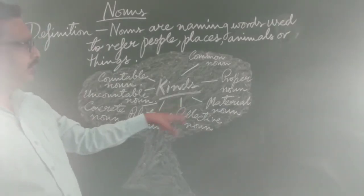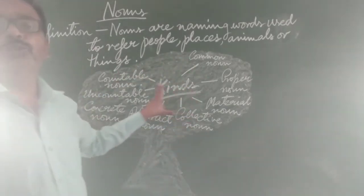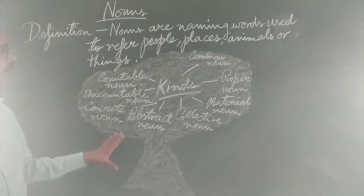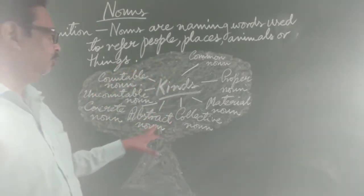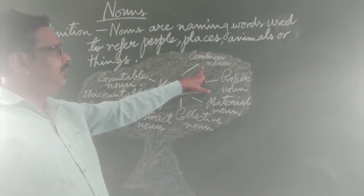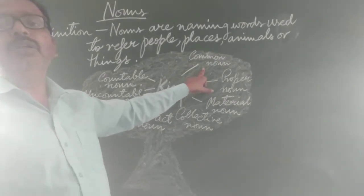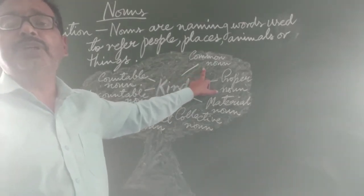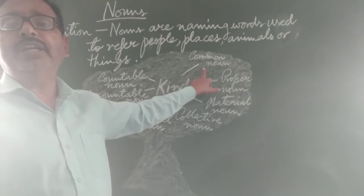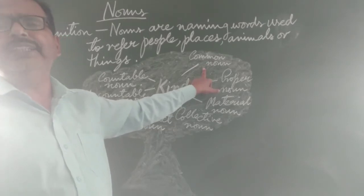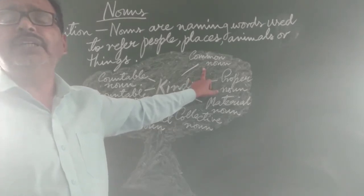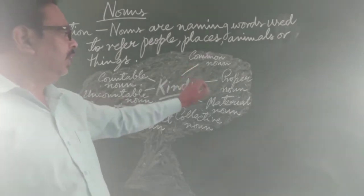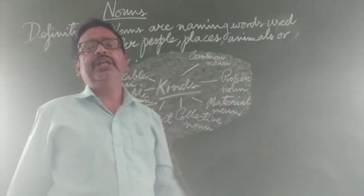You can see this Banyan tree — this huge Banyan tree — and here we have the kinds of Naam. First of all, there is a Common Naam. What is a Common Naam? Any naming word in general — any city, town, village, boy, girl — these are Common Naam.